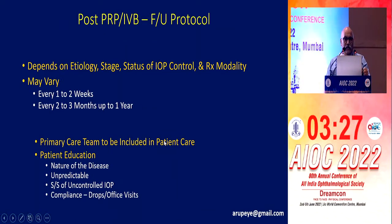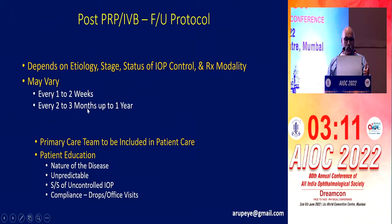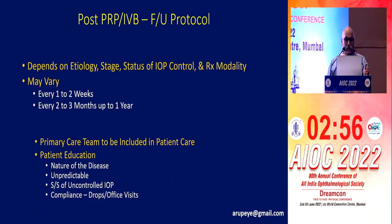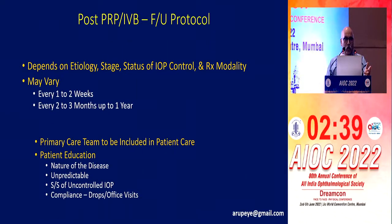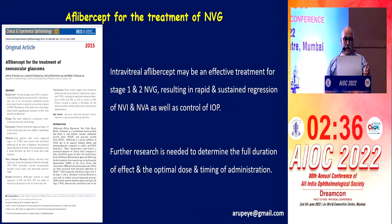The follow-up protocol must be very stringent, depending on the exact etiology, stage at diagnosis, IOP control status, and treatment modality chosen — varying from every one to two weeks, up to every two to three months. It is important to involve the primary care physician and patient counselling forms a very important component, because patients need to know about the recalcitrant nature of the disease and its unpredictability. Patients should be made aware of signs and symptoms of uncontrolled IOP and the importance of compliance and regular checkup.